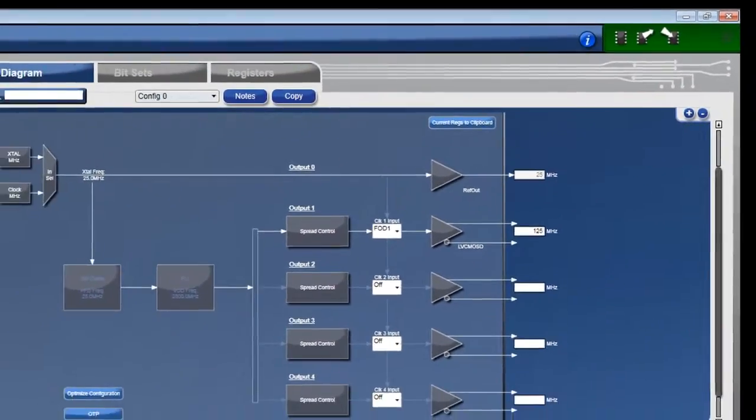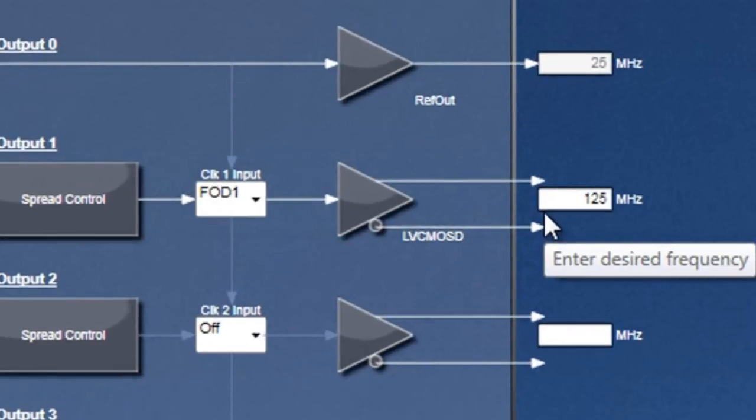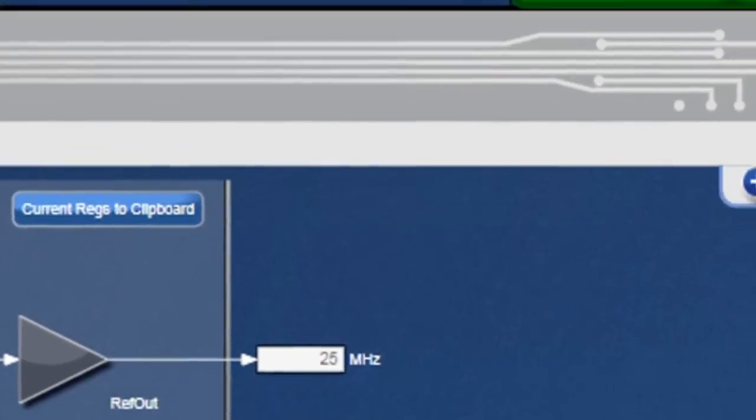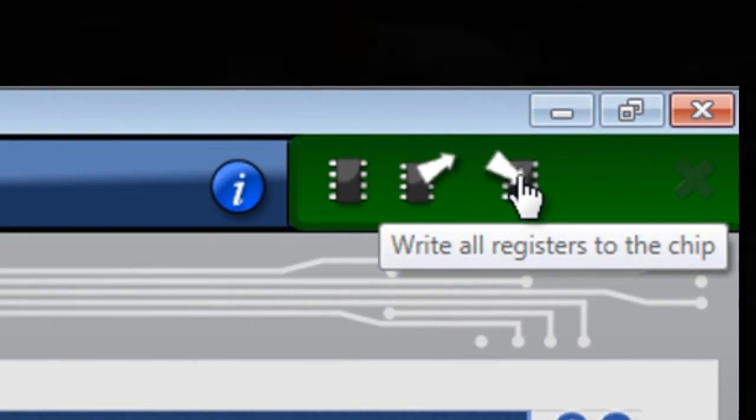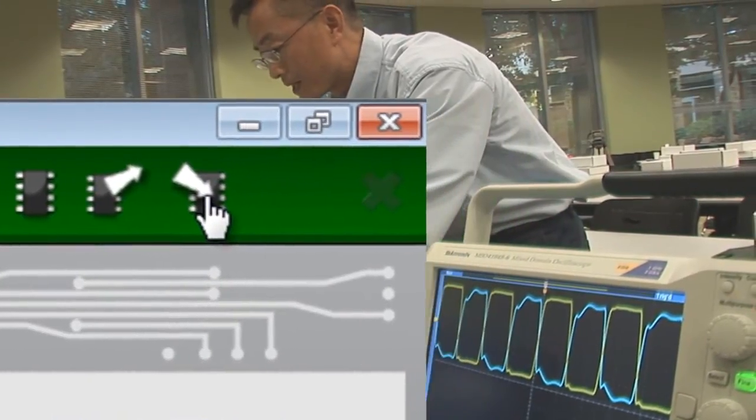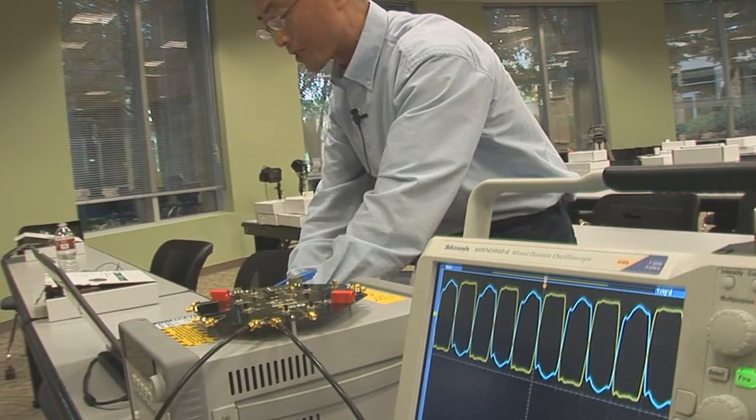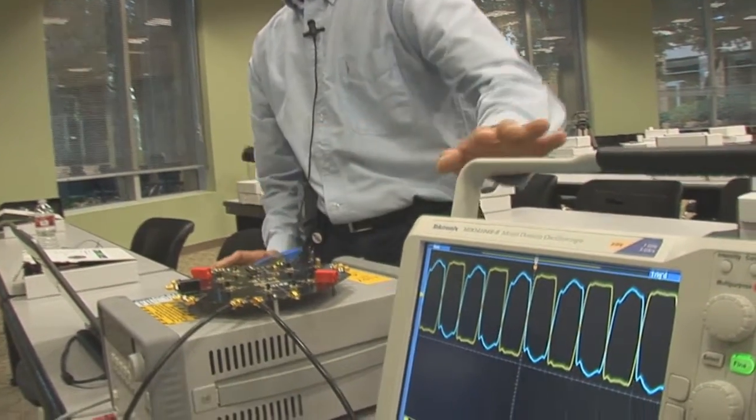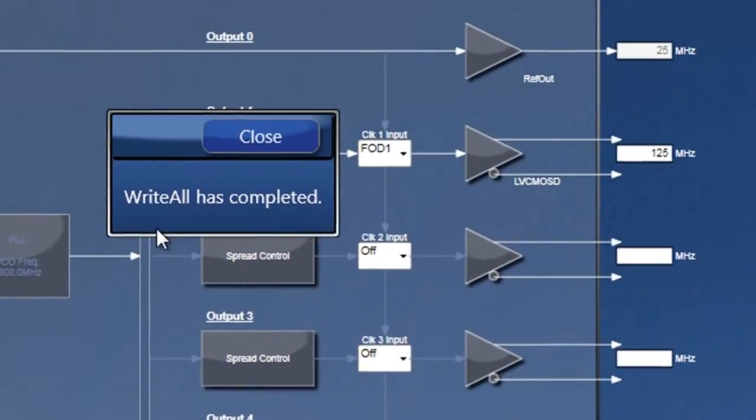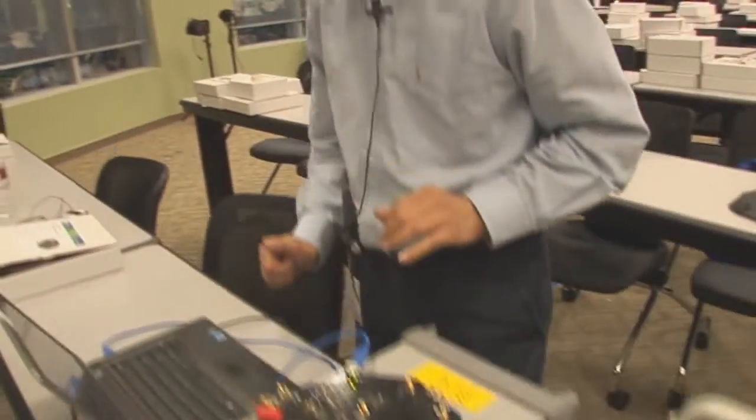Right now I have 25 MHz crystal input, I enter 25 in the input frequency box, and then on the output frequency box for output 1, I have entered 125 MHz. Now once I write this configuration into the chip, you're going to see the change on the screen, on the scope screen. Now this GUI shows write all has completed. The scope screen should have shown the 125 MHz output from the default 100 MHz.